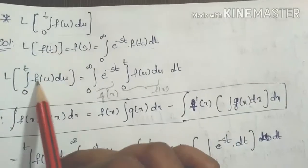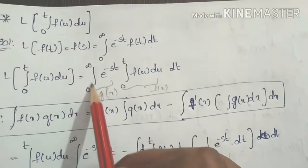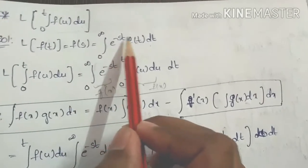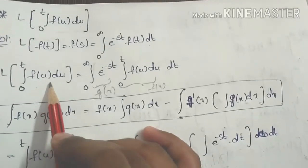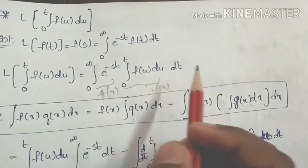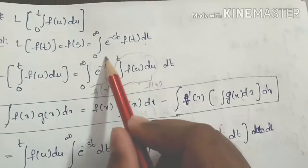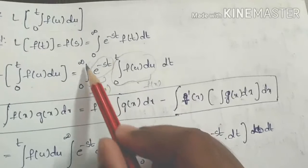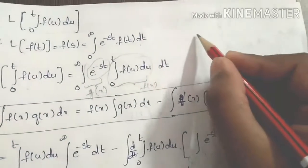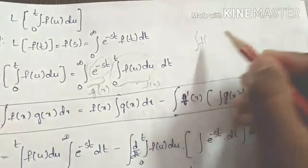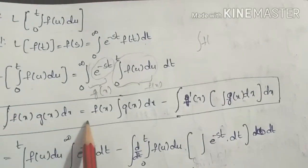Now we substitute: let f(t) be the integral from 0 to t of f(u) du. We apply the definition, writing the integral from 0 to infinity of e^(-st) times the integral from 0 to t of f(u) du, all with respect to dt.